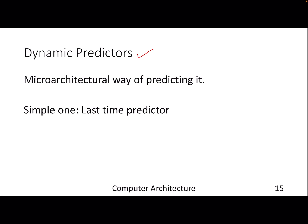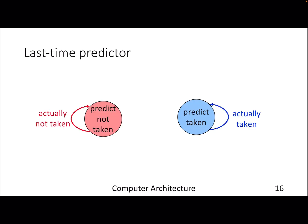If we start predicting using a micro-architectural approach, we need hardware structures in the processor to predict whether a branch will be taken and, if so, where it should go. The first and simplest hardware predictor is the last-time predictor: whatever happened last time, predict the same thing next time. Its state machine is simple — if a particular PC was not taken last time, predict not taken.